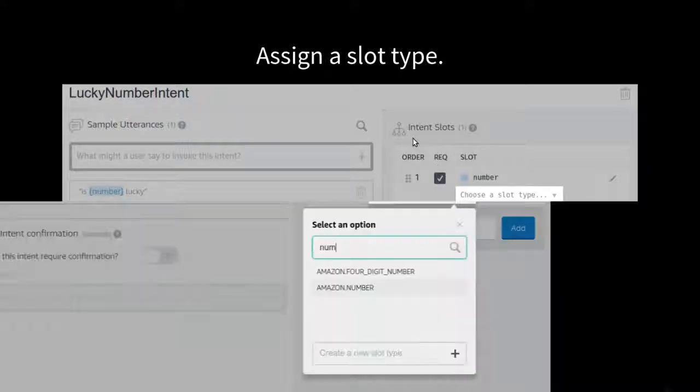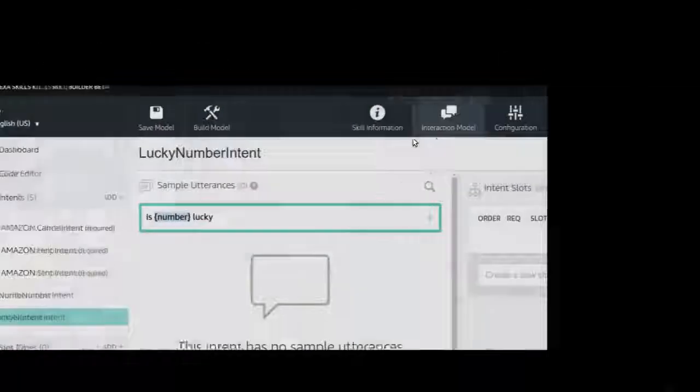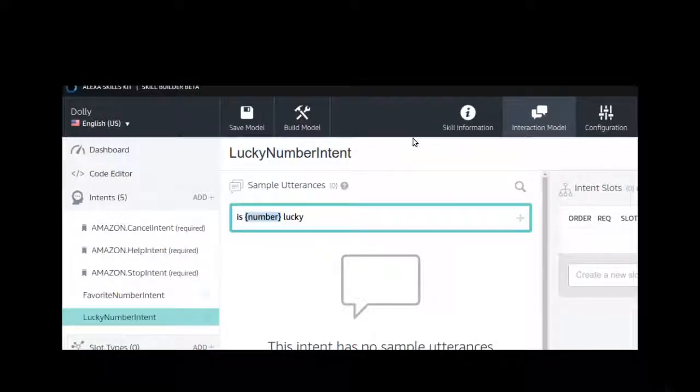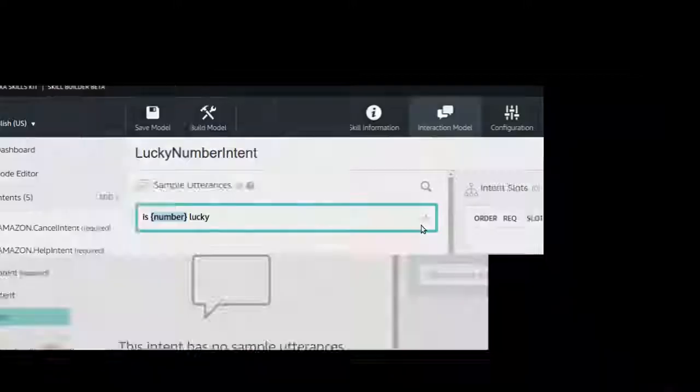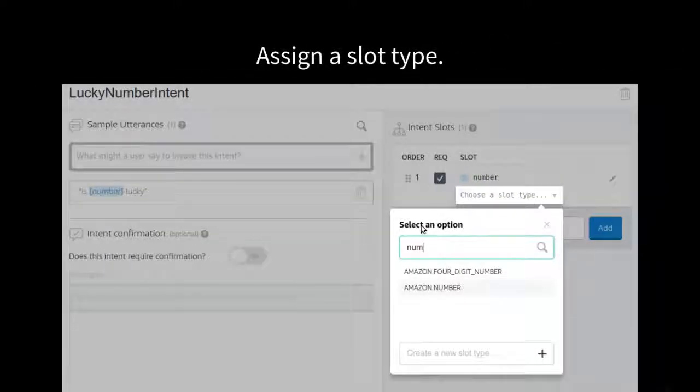We've got is number lucky and we're going to assign it a number slot here. These are the slot intents. What we're going to do is say to the skill, is some number lucky? So is 13 lucky? Then it will give us some kind of answer. We want to have this be a variable that can be like Mad Libs, where this number is just going to be a number in the slot.